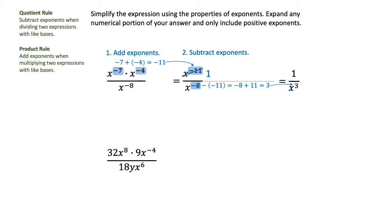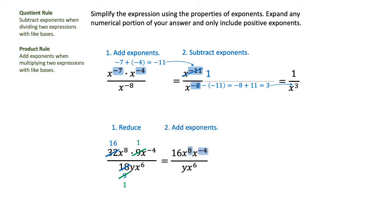In the second expression, I'm first going to look at the numbers and reduce them. With 32 and 18, I can divide by 2, leaving 16 and 9. Then there's another 9 in the problem, so I can cancel the 9s out, leaving 1s in those positions. My new expression after reducing is 16x to the 8th power times x to the negative 4th power over y times x to the 6th power. Then I add the exponents in the numerator: 8 plus negative 4 is positive 4, giving me 16x to the 4th in the numerator and yx to the 6th in the denominator.